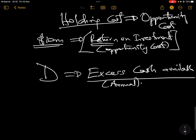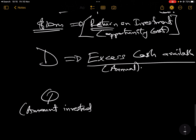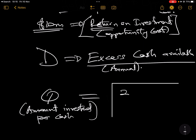The same EOQ formula is used. Q — the amount you should invest per transaction — is calculated as: the square root of (2 multiplied by transaction cost multiplied by annual excess cash available, divided by opportunity cost). This is the Baumol EOQ for cash, identical in structure to the inventory EOQ formula.